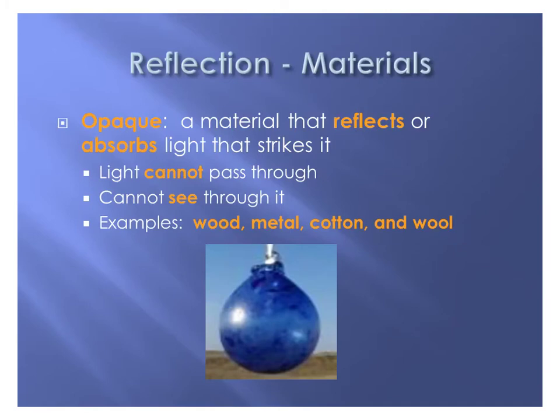The first type of material is called opaque. You may have heard of this before when talking about different colors. Any opaque material is something that reflects or absorbs the light that strikes it. It might give us certain colors, or if it absorbs the light we end up with darker colors. Opaque means that light cannot pass through it, so we're not able to see through it. Examples would be wood, metal, cotton, and wool.